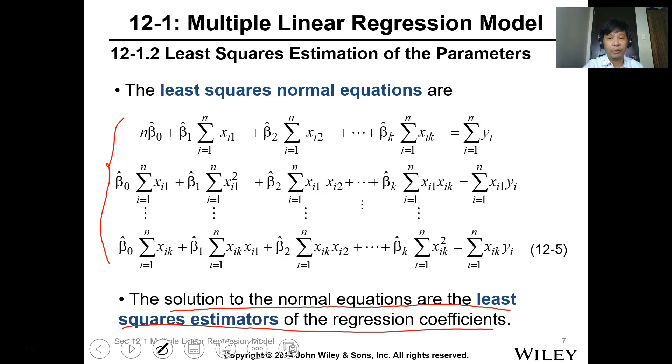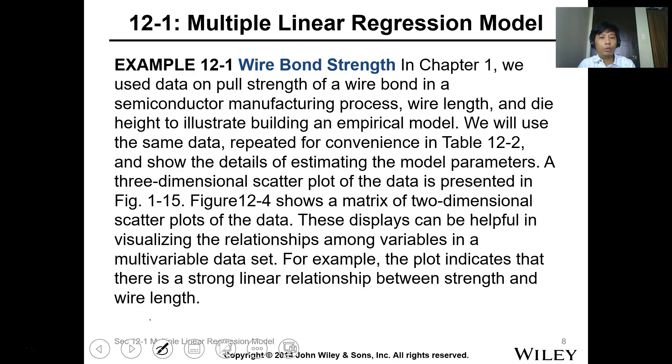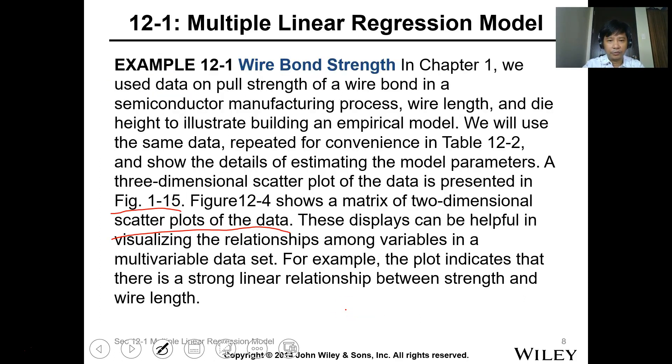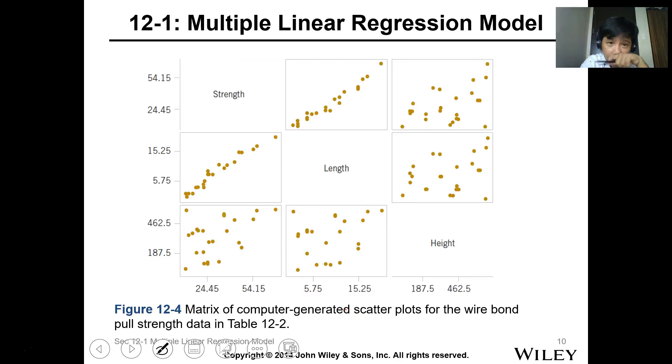Wire bond strength. In chapter one, we use data on pull strength of a wire bond in a semiconductor manufacturing process by length and die height to illustrate building an empirical model. We'll use the same data repeated in table 12-2. A three-dimensional scatterplot of the data is presented. This is what I showed you in the empirical model, figure 1-15. Figure 12-4 shows a matrix two-dimensional scatterplot of the data. So this is the data in table 12-2. You have two independent variables and you want to get the pull strength with 25 data set.